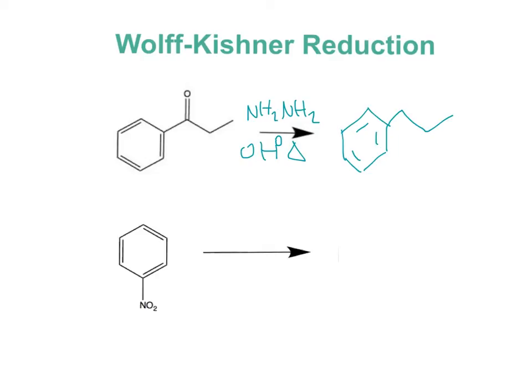The main difference between a Clemmensen reduction and a Wolff-Kishner reduction is that the Clemmensen reduction uses a strong acid while the Wolff-Kishner uses a strong base. We can also do a nitro reduction using H2 and palladium over carbon, or we can also use tin and HCl. The tin and HCl will reduce a nitro group but will not reduce alkenes. However, both of these methods will reduce to an amine.